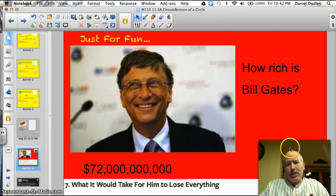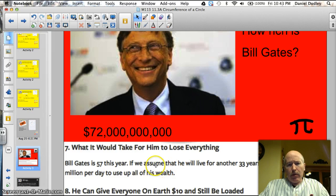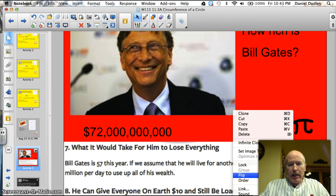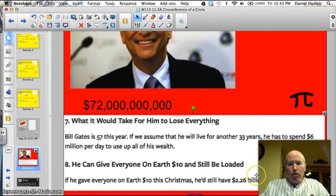Here we go. He's worth $72 billion. Yes, folks, that's nine zeros. But what is $72 billion? Here we go. Weird thing number seven on this list of top things. If Bill Gates is 57 this year, if we assume he lives for another 33 years, he has to spend $6 million per day to spend all of his money up. Yeah, $6 million a day for 33 years. Here's a great one. I love this one here. He could give everyone on Earth $10 for Christmas and still have $2.26 billion left. Can you imagine? I didn't get my 10 spot. All right. Those are just some crazy facts I found out about him.